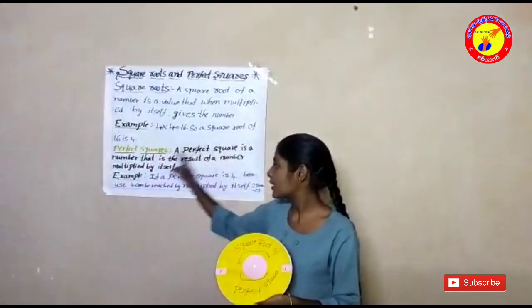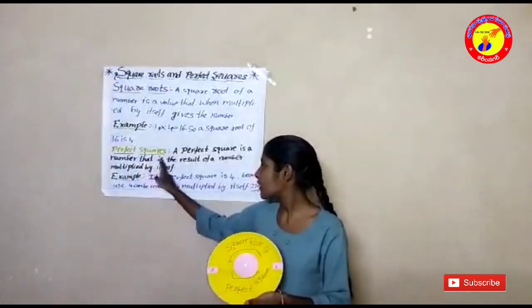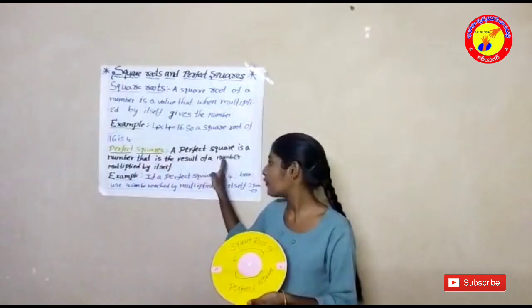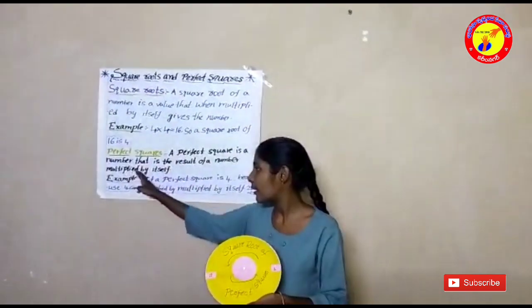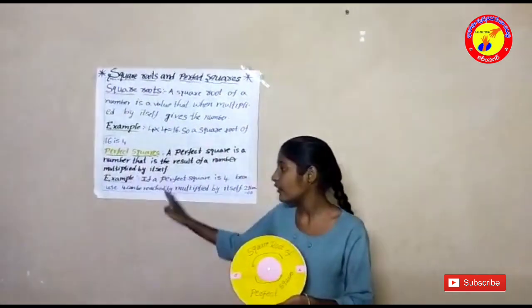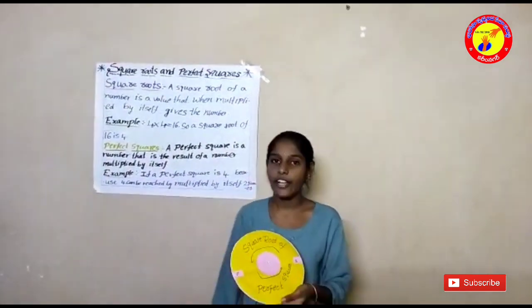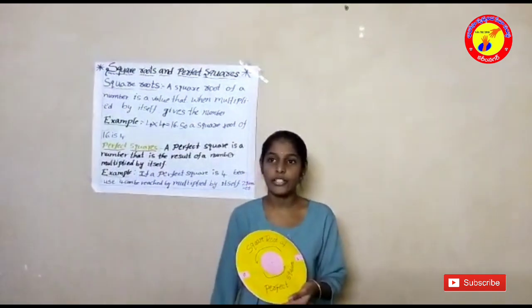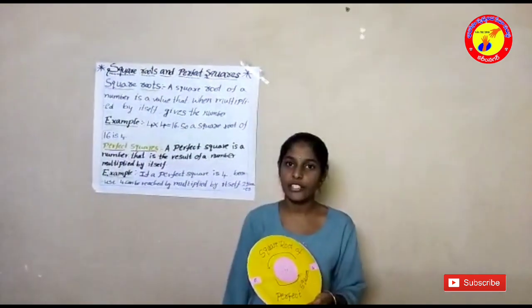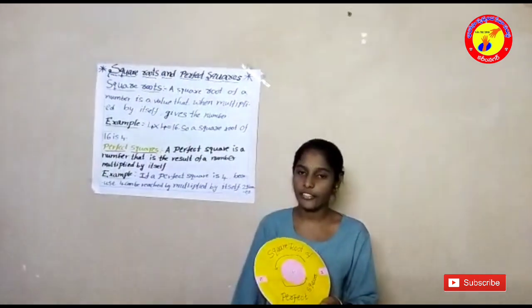Now I want to explain about the perfect square. A perfect square is a number that is the result of a number multiplied by itself. For example, 5 squared — 5 into 5 is equals to 25.